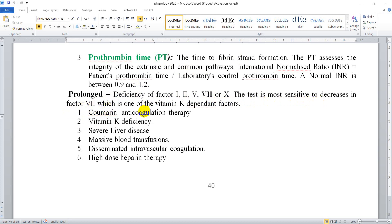Factor 7 is one of the vitamin K dependent factors, which helps discover the level or concentration of vitamin K in the body.